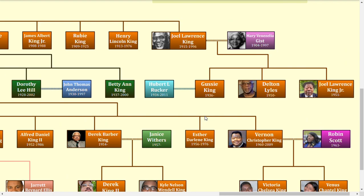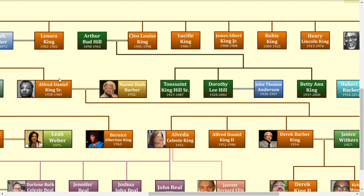Also, several of Alfred Daniel King's children — Alfred Daniel, Esther Darlene, and Vernon Christopher — all died from heart attacks, two of which were also drownings, as well as MLK Sr. himself.